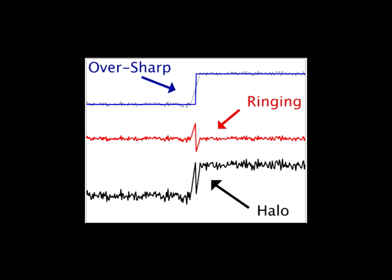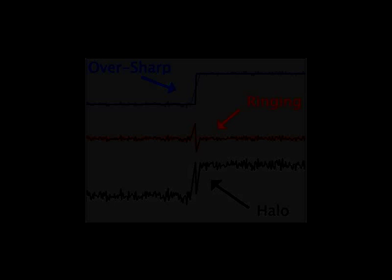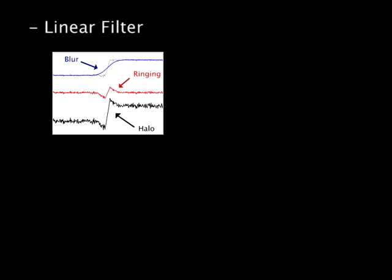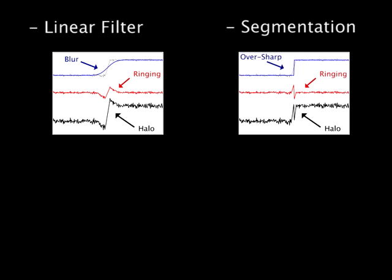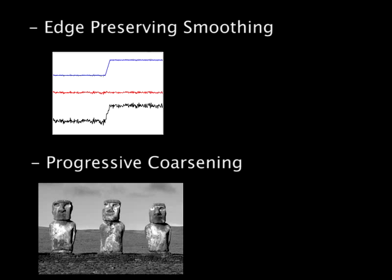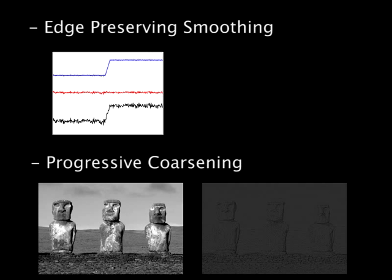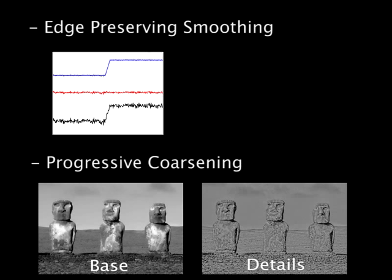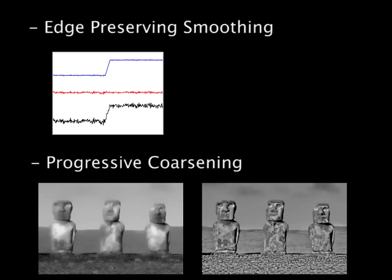Oversharpening of strong edges may also cause artifacts. Thus, neither linear filtering nor hard segmentation is well-suited for detail extraction, and in practice edge-preserving smoothing operators are used. In addition, for a multi-scale decomposition, the operator must be able to smooth increasingly larger features, allowing larger scale detail to migrate from the base layer into the detail layer.